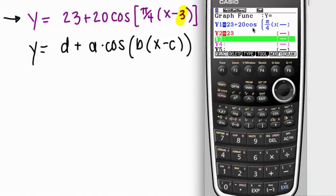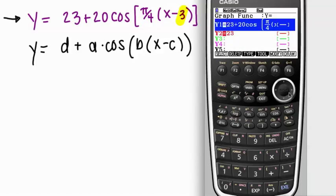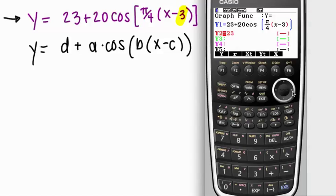23 plus 20, cosine, and then parentheses, pi over 4, and then parentheses again. So we've got open parentheses twice. So I can scroll over and you can see, and then the x minus 3 in parentheses.